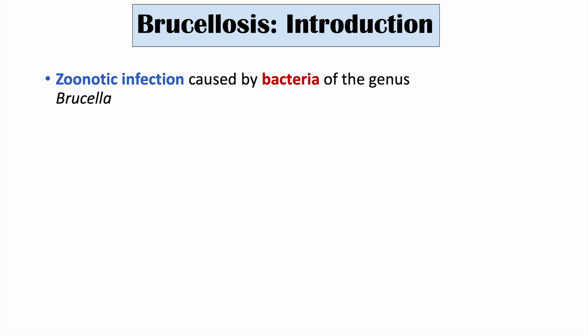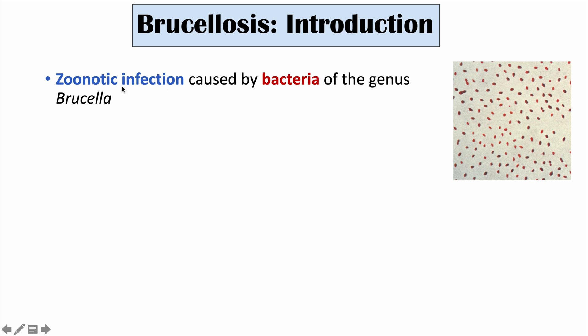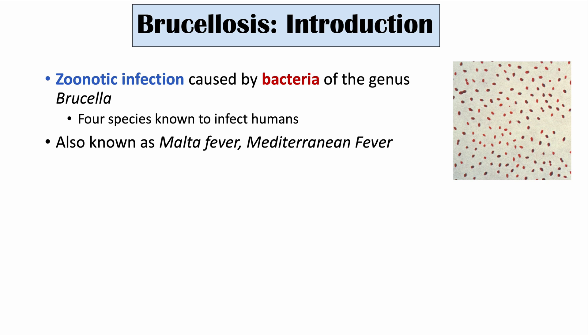Brucellosis is a zoonotic infection caused by bacteria of the genus Brucella. Zoonotic infection means it comes from animals — you can think of 'zoo.' There are actually four species known to infect humans. This condition is also known as Malta fever and Mediterranean fever.